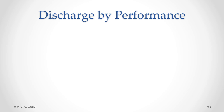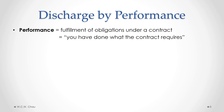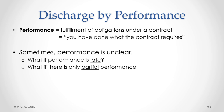The first type of discharge we'll look at is discharge by performance. That is where you actually do what you are required to do under the contract. Once you've done your contractual obligations, you are discharged from the contract and don't have to do anything more. This sounds very simple if everything goes properly, but there could be some issues where it's unclear whether someone is considered to have performed what they're required to do under the contract.